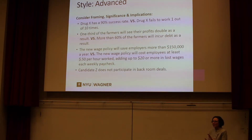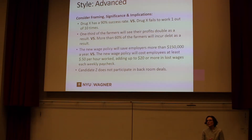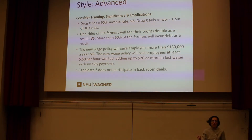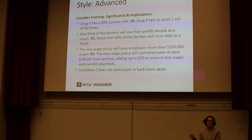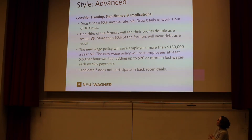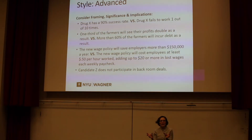Framing significance and implications — this is the fun stuff. A lot of people say policy memos should be objective, but in my personal opinion, everything is subjective. There's always a sense of what your organization needs to achieve and who you're rooting for. There's a way of writing your sentences and presenting evidence that implies support or implies you don't want something supported. For example: 'Drug X has a 90% success rate' versus 'Drug X fails to work one out of ten times.' This is the exact same statistic, just presented two different ways. Reading it the first way, you're much more likely to be excited and support it.